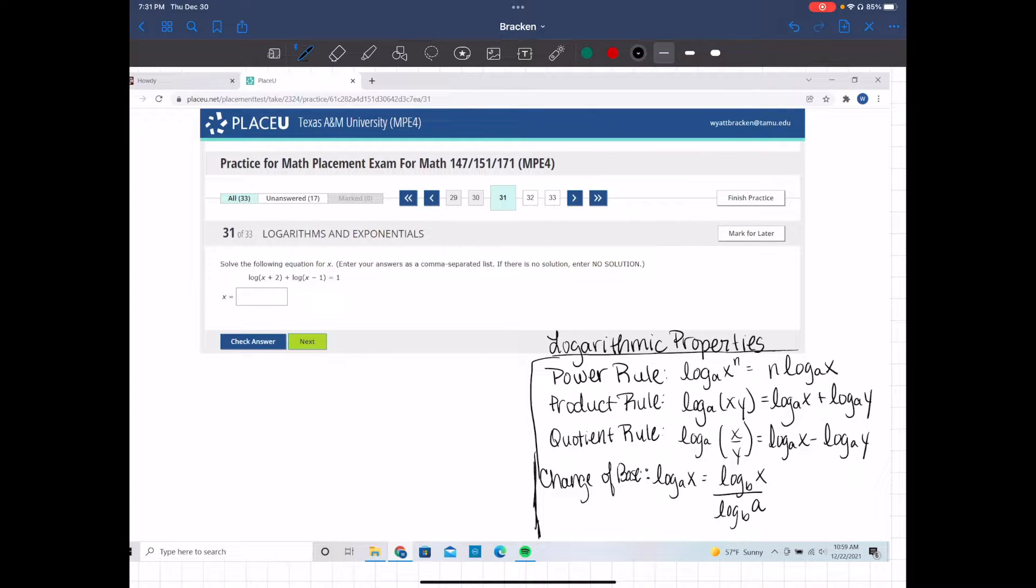The quotient rule: log base A of x divided by y equals log base A of x minus log base A of y. And then our change of base: log base A of x equals log base B of x over log base B of A.